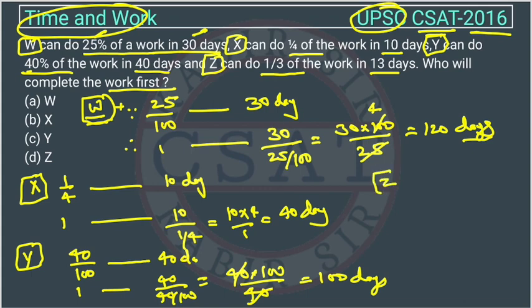For Z, we will calculate. Z can complete 1 by 3 of the work in 13 days. You can do it directly here also. Like, 1 by 3 of the work is completed in 13 days, so 1 work will be 13 into 3. Similarly, here 1 by 4 work they are completing in 10 days, so this is equal to like 25%. Otherwise, you can use this method.